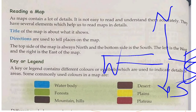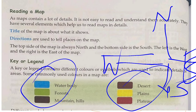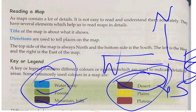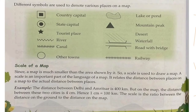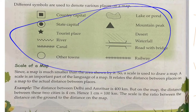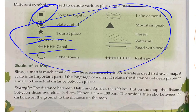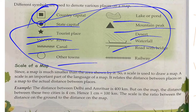Key and Legend: A key or legend contains different colors and symbols that indicate details. For example, blue shows water bodies, green shows jungle, brown shows mountains, light brown shows desert, yellow shows plains, and red shows plateau. Different symbols are also used: one symbol represents a country's capital, another for state capital, tourist place, river, canal, other towns, lake and pond, mountain peak, desert, waterfall, road with bridge, and railway.